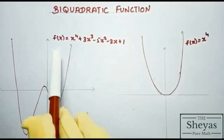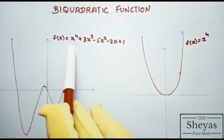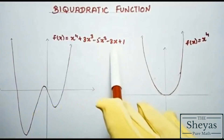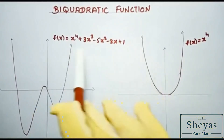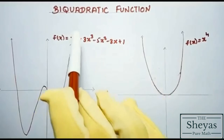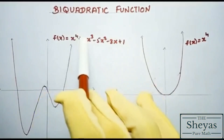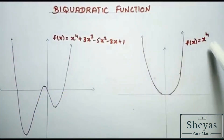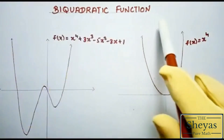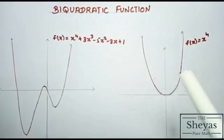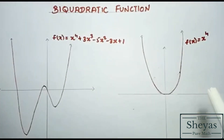In this function, f of x is equal to x to the power 4 plus 3x cube minus 5x square minus 3x plus 1, the highest power of x is 4. And in this graph also the highest power of x is 4, so we call this a biquadratic function. These are the examples of graphs of biquadratic functions.